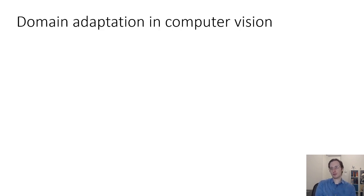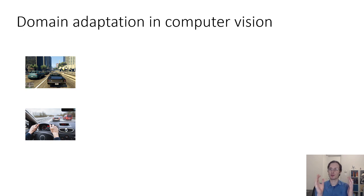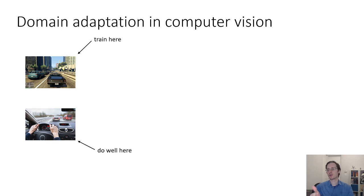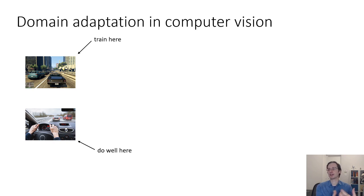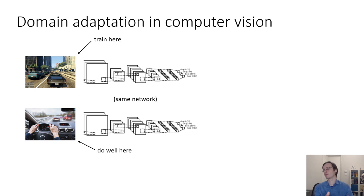Before I get into RL algorithms, I want to talk about how other fields — namely computer vision — have approached some of these issues. I'll start with a discussion of domain adaptation, that first bullet point where you have systematic domain shift between the source domain and the target domain. If we forget about RL for a minute and imagine we're learning a visual perception task in this setting, what we might want to do is train that visual perception task in the source domain and have it work in the target domain. A reasonable assumption is that we have access to a small dataset in the target domain, but it might not be labeled. If you train your network in the source domain and run it in the target domain, you might find it produces the correct answer in the source domain but the wrong answer in the target domain.